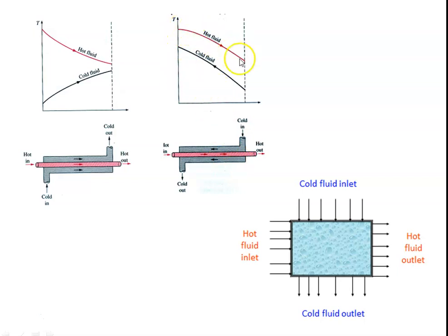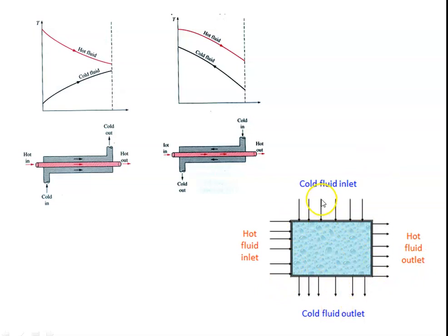In the counter flow temperature profile, the hot fluid temperature decreases from inlet to exit and the cold fluid temperature increases from inlet to exit. In the cross flow heat exchanger, the cold fluid enters at the top and leaves at the bottom, while the hot fluid enters at the left side and leaves on the right side — the flow directions are perpendicular to each other. So: same direction is parallel flow, opposite direction is counter flow, and perpendicular direction is cross flow heat exchanger.